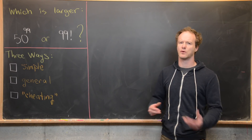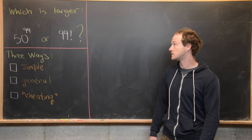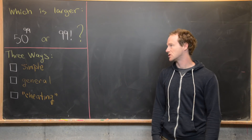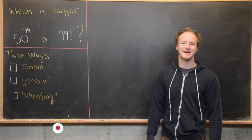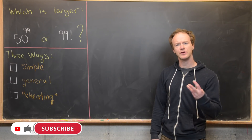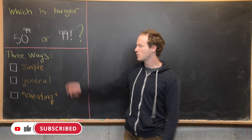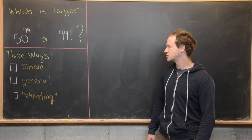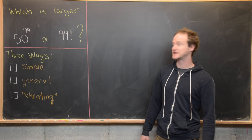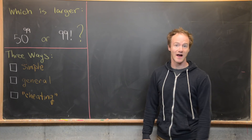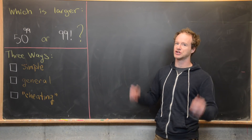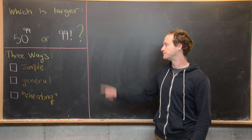We're going to look at a classic type of arithmetic puzzle: we want to determine which one of these numbers is larger, 50 to the 99 or 99 factorial. We're going to do this three different ways — one way which is a pretty simple calculation, another way where we prove a general statement that will imply this, and then another way which I'm going to call cheating. We'll see what that is at the end.